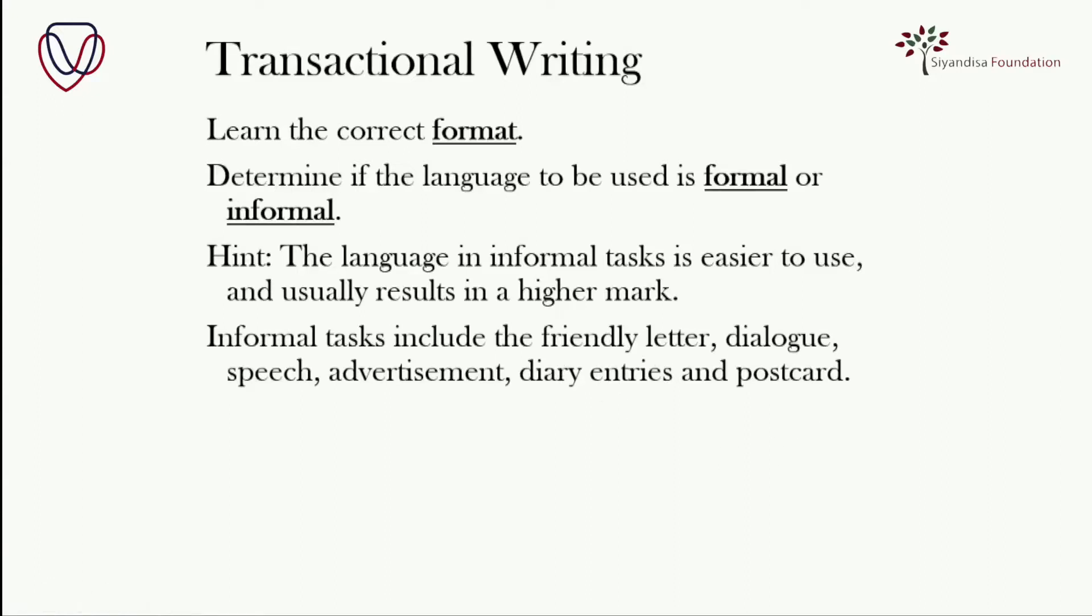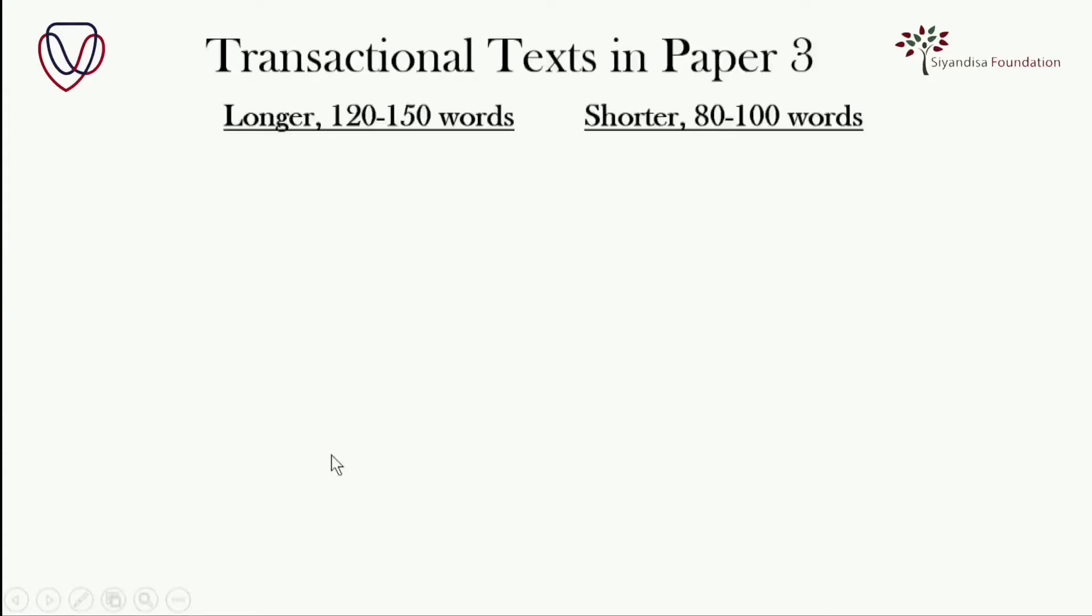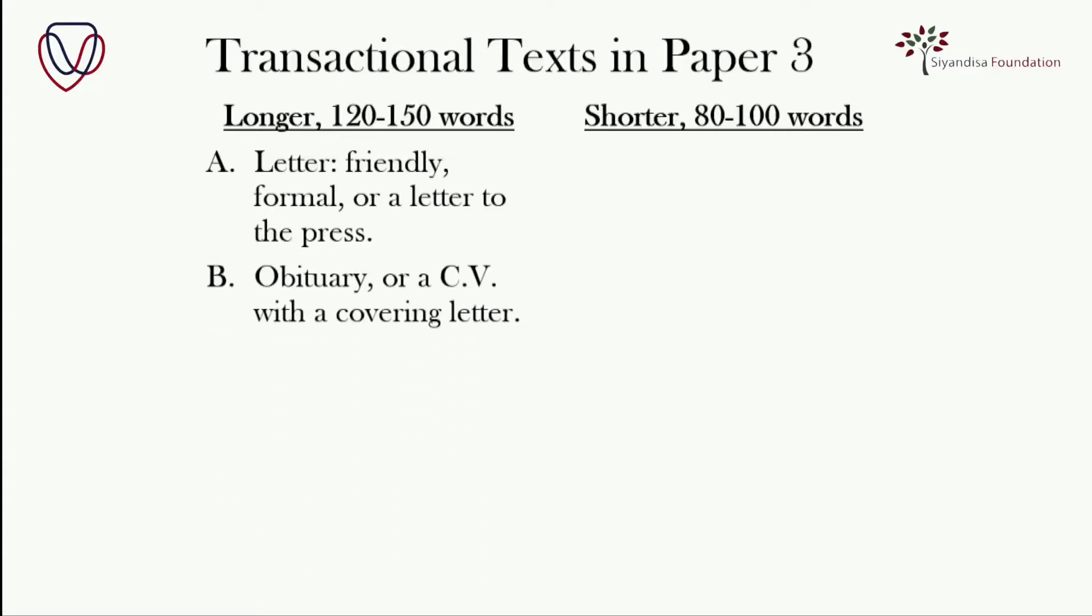Now, let's take a look at how the transactional texts work in paper three. First, the longer transactional, 120 to 150 words. And here is the makeup of how the choices are granted. You'll be given one choice from category A, which is letters. You can have a friendly letter, a formal letter, or a letter to the press. But it'll only be one of those three. Next, an obituary or a CV with a covering letter.